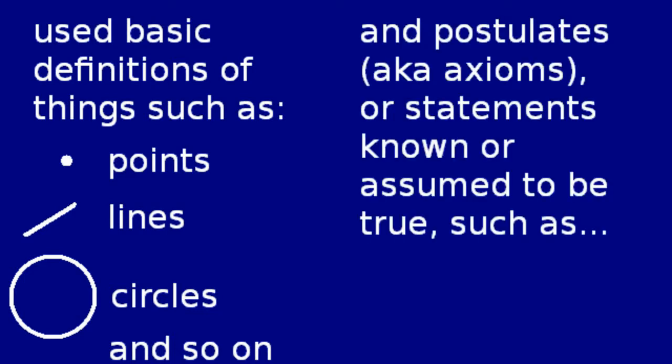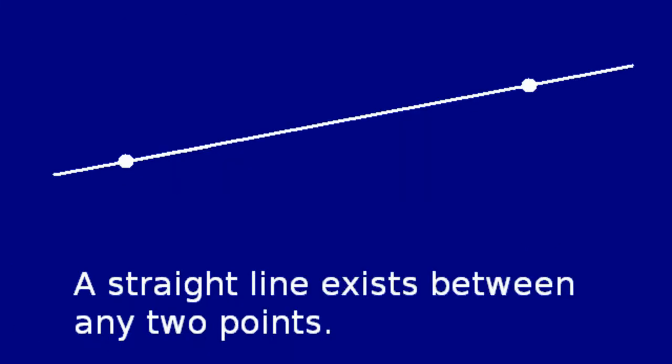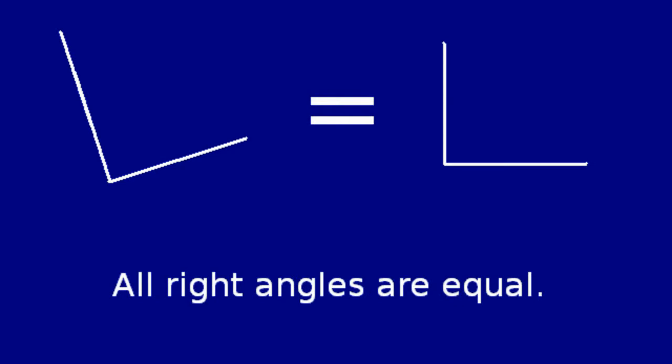and postulates, also known as axioms, or statements known or assumed to be true, such as, a straight line exists between any two points. All right angles are equal.